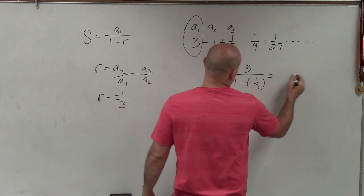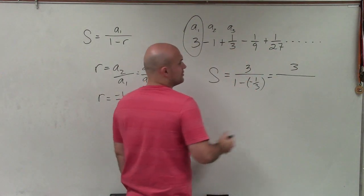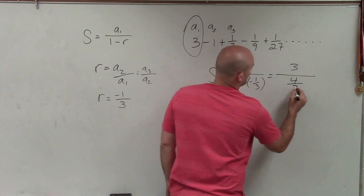So now to go ahead and simplify that, I have 3 over 1 minus 1 third is going to be a positive 4 thirds.